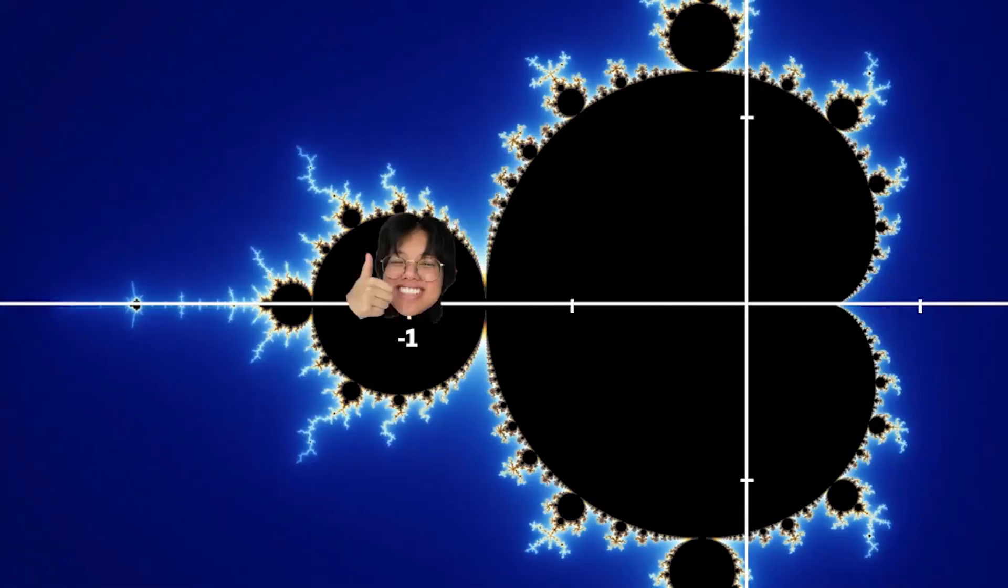However, if c makes the numbers stay less than or equal to two, it'll be in the set. The reason why fractals are so special isn't just because they look cool. It's because they defy geometry as we know it. We have 1D, 2D, and 3D, right? But fractals we have 1.26 or 2.73D, which is called fractal dimension.